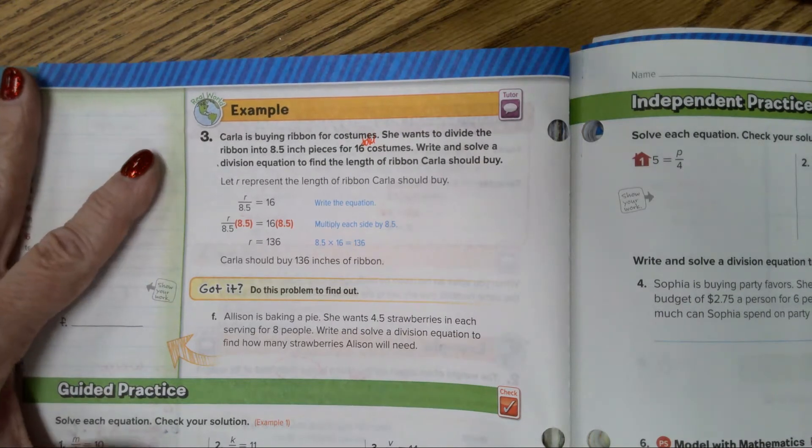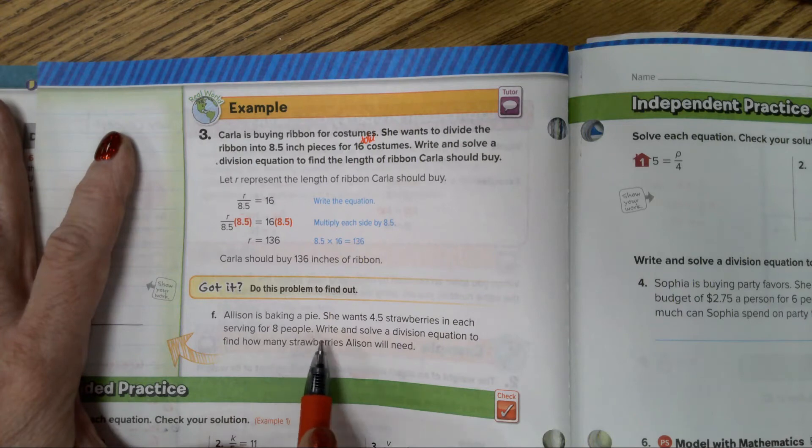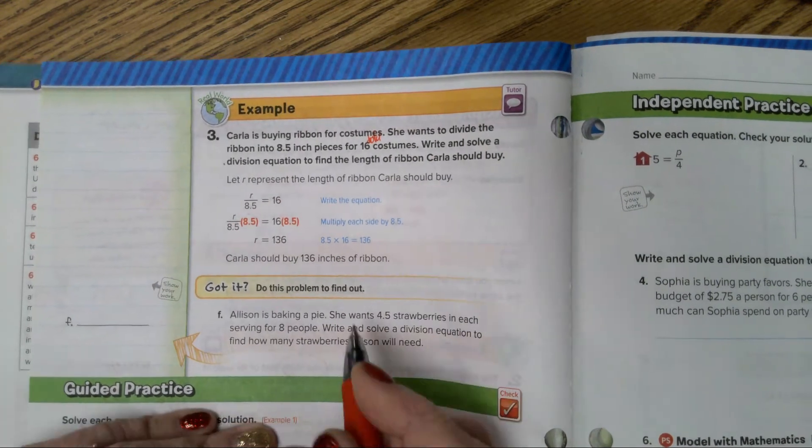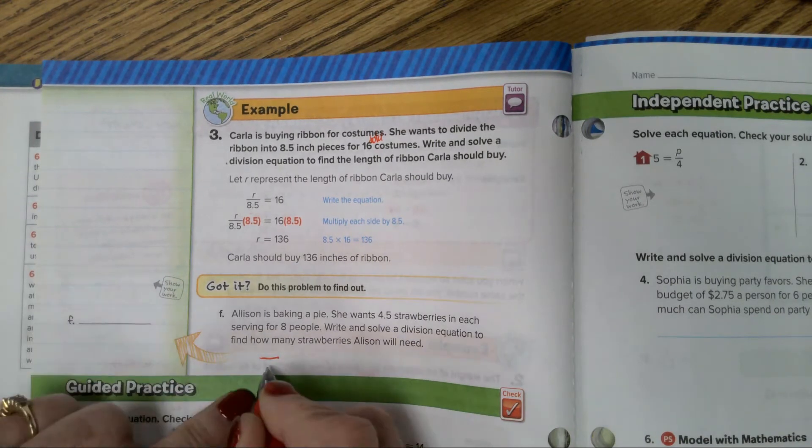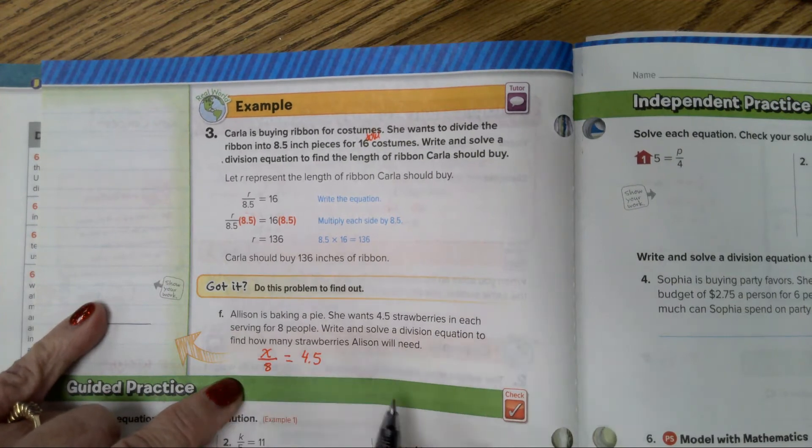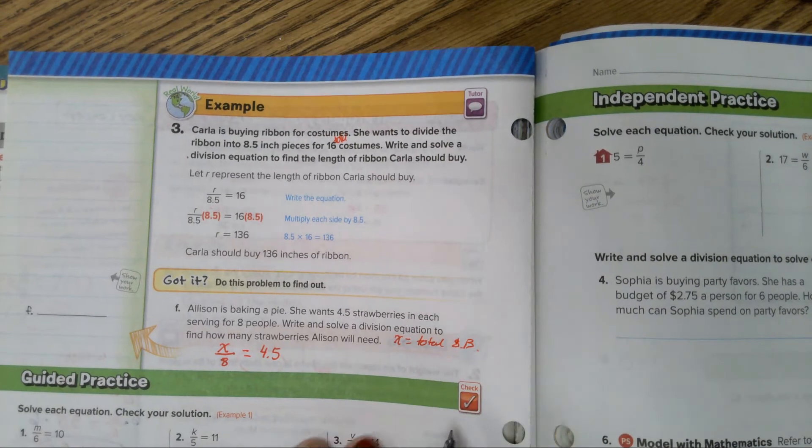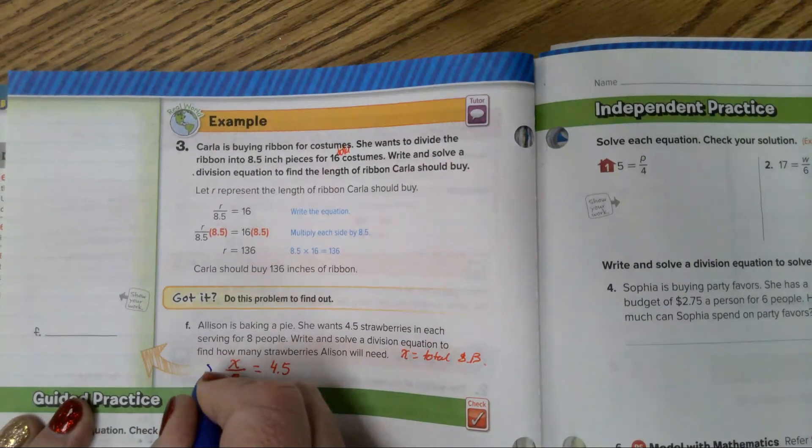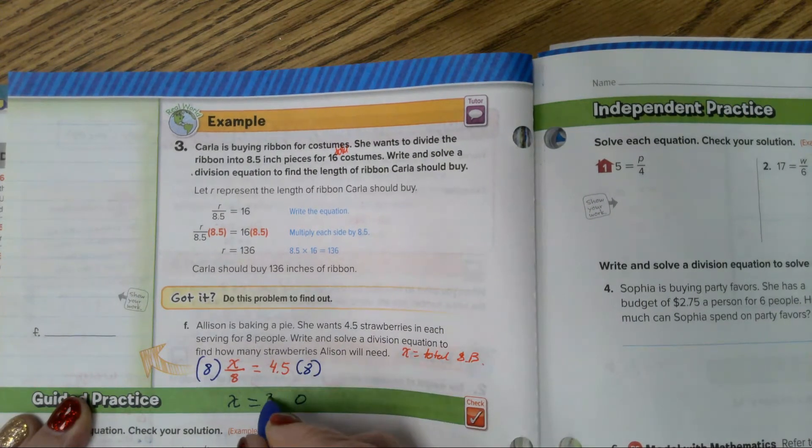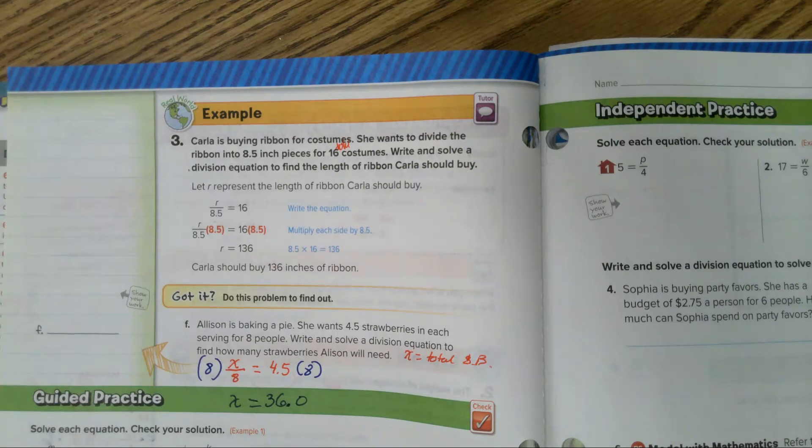Now, let's do letter F. Allison is baking a pie. She wants 4.5 strawberries in each serving for 8 people. Write and solve a division equation to find how many strawberries Allison will need. The number of strawberries is going to be on top, divided by 8. And that means each person is going to get 4.5 strawberries. So I'm going to use the variable X equals total strawberries. Now, we just multiply both sides by 8. And you end up with X equals 36.0. So X equals 36 strawberries are needed in order for each person to have 4.5 strawberries.